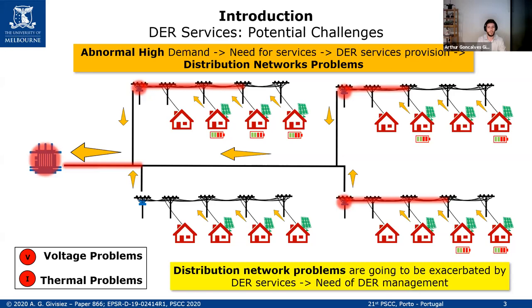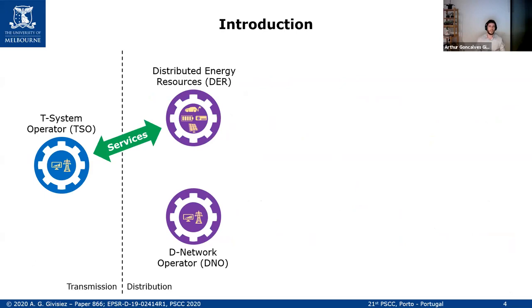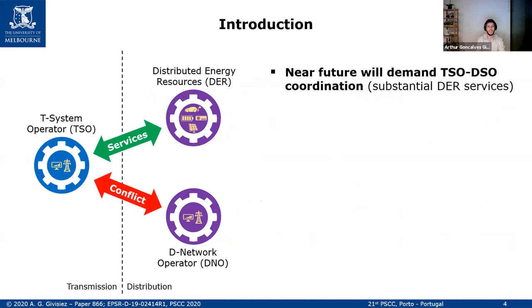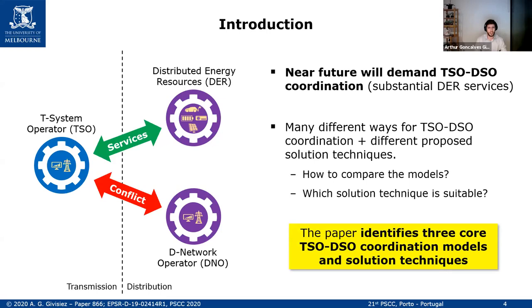They can be voltage problems or thermal problems depending on where it is in the network. Basically, we need to manage these DERs to avoid this problem. Bringing this to the context of TSO-DSO coordination, right now DERs are providing services through aggregators to the TSO. However, no one is verifying if the distribution network can really deliver the services, so there is a conflict between the DSO and the TSO. In the near future, we expect that TSO-DSO coordination will be needed because of the increased DR services provision.